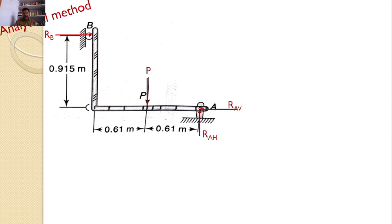First equilibrium equation: sigma Fx equals 0, so Rav equals Rb. This is equation 1. Sigma Fy equals 0, so Rah equals P. This is equation 2.